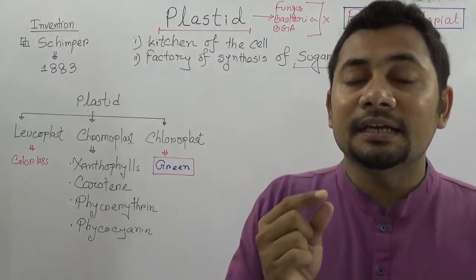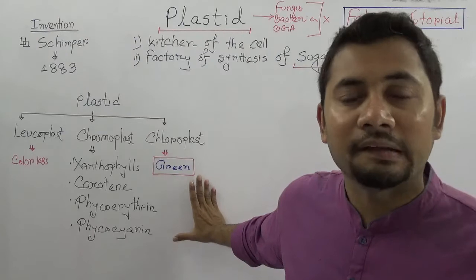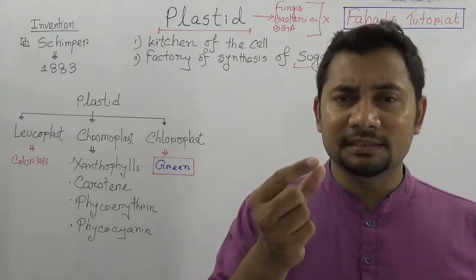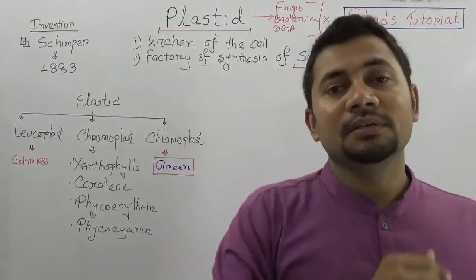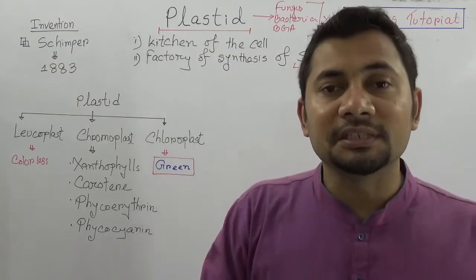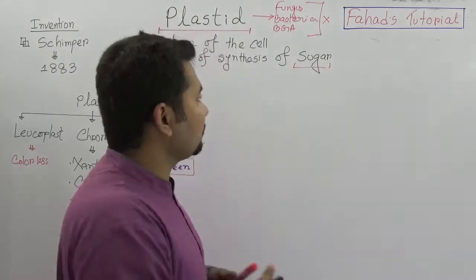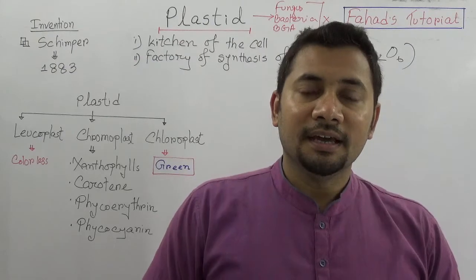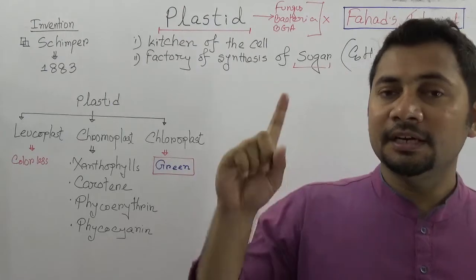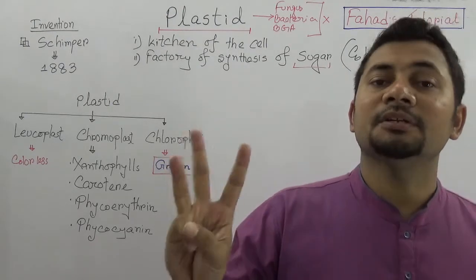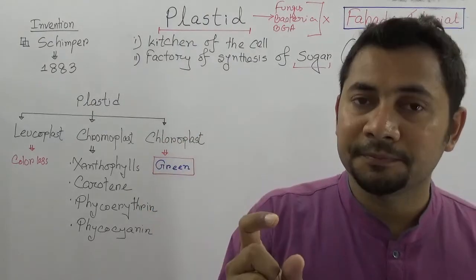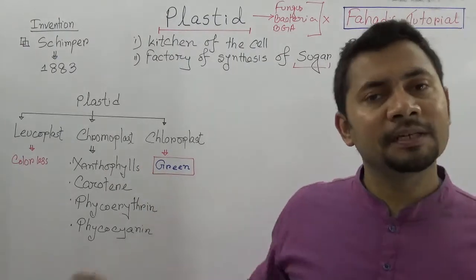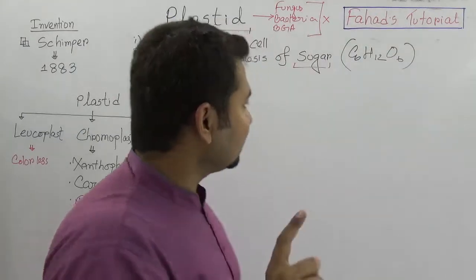Chloroplast is the only green plastid because it contains chlorophyll. The chlorophyll is responsible for transforming solar energy into chemical energy. Through photosynthesis, plants produce sugar — C₆H₁₂O₆ — which is the main food produced through the plastid. This is why the plastid is so important. The chromoplast contains many different pigments, while the chloroplast contains only chlorophyll.